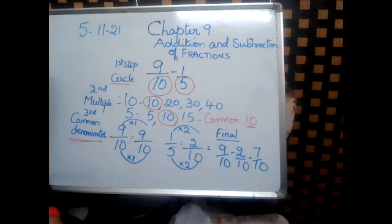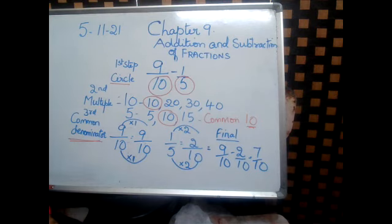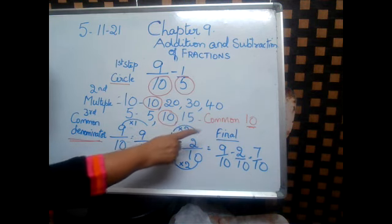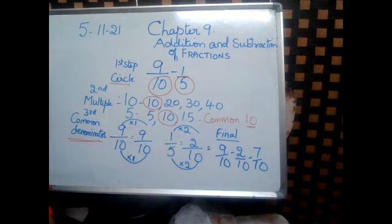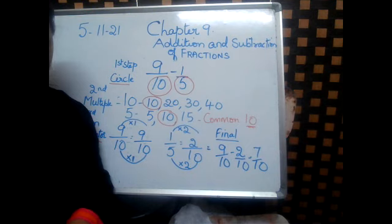This is called the fraction method, or the factorization method, by which we find the factors or the multiples of the given denominators. It is the least common multiple method. 5, 10, 15, 20, 25, 30 — we find the least common multiple, the common multiple. Hope you have understood the way to add and subtract.